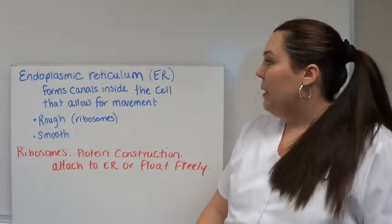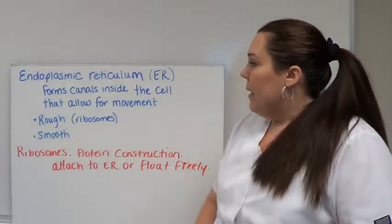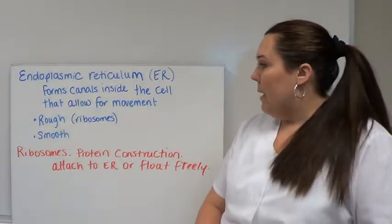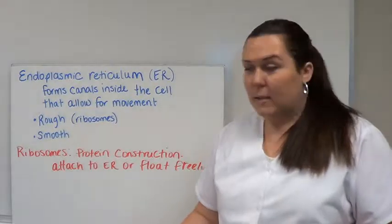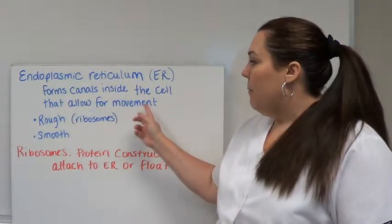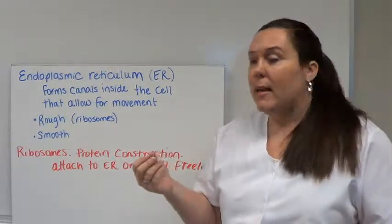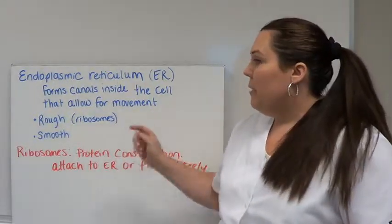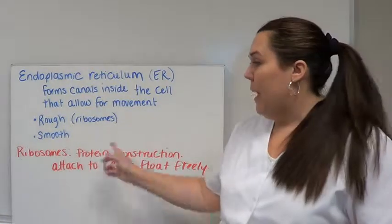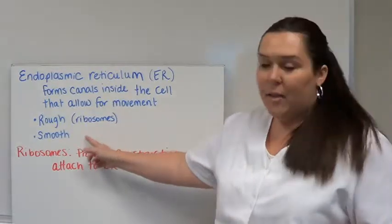Starting with the endoplasmic reticulum, or the ER for short. The endoplasmic reticulum forms canals inside the cell that allow for movement, similar to the hallway of a building. It allows for movement of chemicals inside the cell. There are two types of endoplasmic reticulum: the rough endoplasmic reticulum and the smooth.